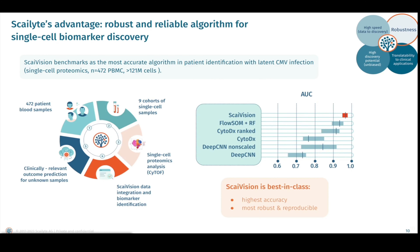Another claim I would like to support with numbers is the reliability and robustness of discoveries by Skyvision. This experiment shows the results of a benchmarking study our data scientists performed to compare Skyvision against other public competing algorithms. We used a large public dataset consisting of PBMC samples from 472 patients split into nine separate clinical cohorts. For each individual, the CMV infection status was known, and our goal was to train a model that could predict the CMV status of individuals from a held-out cohort.